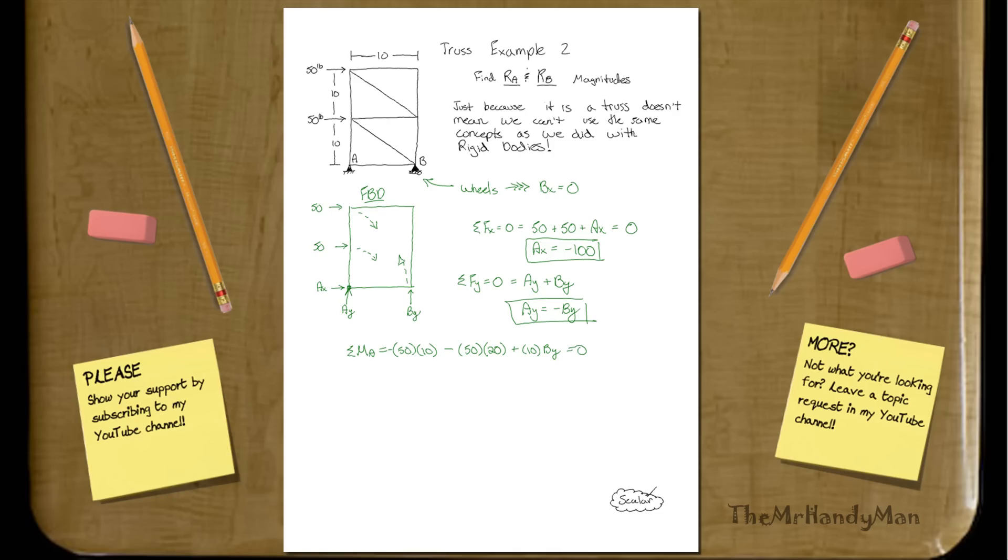So this all equals zero, and if we just kind of lay this all out, what you'll get is 10 B_Y is equal to 500 plus 1,000, which, using that, B_Y will equal 150 pounds. Not too bad.